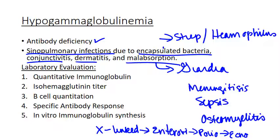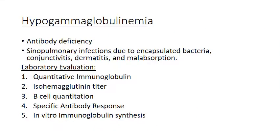So how can you diagnose it, since these are all kind of nonspecific problems? They're just infections that kids sometimes get. If you're a parent, your kid's going to get ear infections all the time — are you supposed to worry they have hypogammaglobulinemia every time? Probably not. So what's a good way of ruling this in or out? We have screening tests that test for B-cell function.